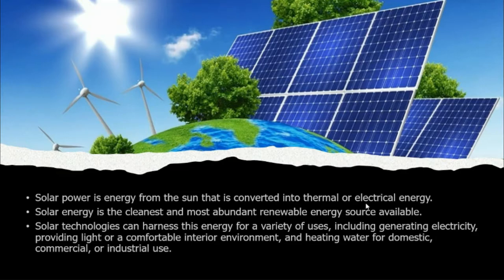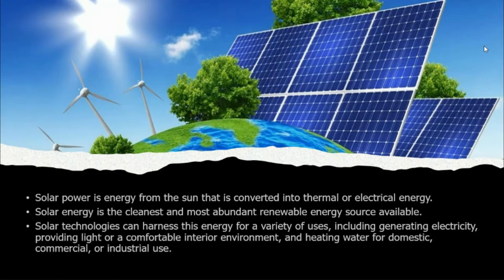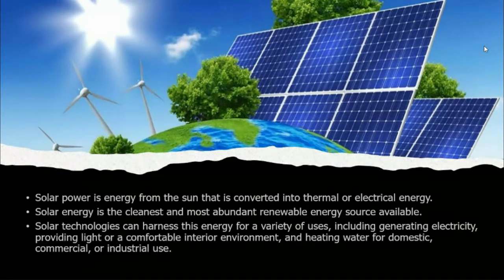The energy coming from the Sun is captured by solar panels. They are connected with batteries, which then get charged. We use solar inverters, and nowadays inverters are integrated — meaning you can charge the battery from both the external electricity supply and from the solar panels.